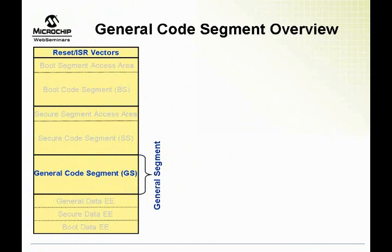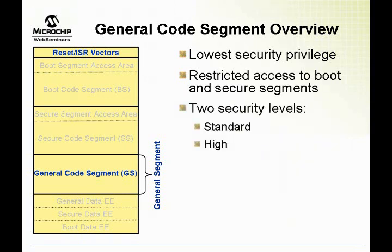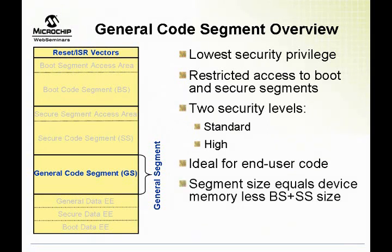The general segment begins wherever the boot and secure segments end. If no boot or secure segment exists, all code is considered to be in the general segment. The general segment has many restrictions when accessing code in the boot or secure segments. A full list of these restrictions is provided in the security section of the dsPIC family reference manual. The general segment is ideal for storing large tables, IO and peripheral drivers, etc.